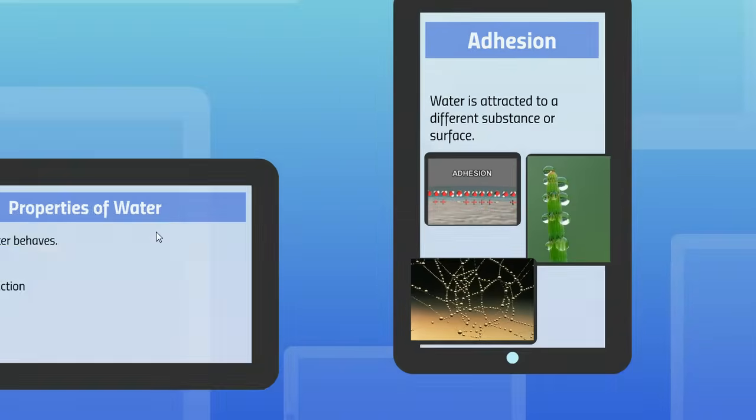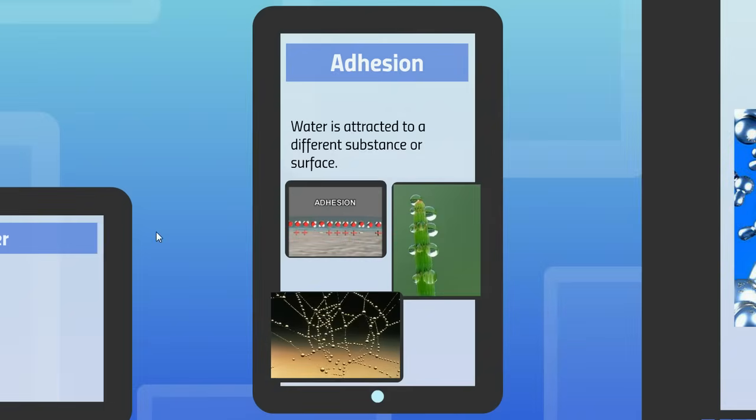The first one, adhesion, is when water is attracted to some other substance or some other surface. So the positive and negative sides of the water molecule are attracted to positive negative sides of some other thing.